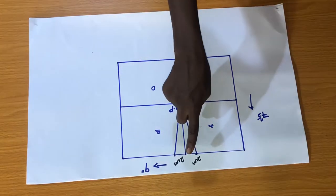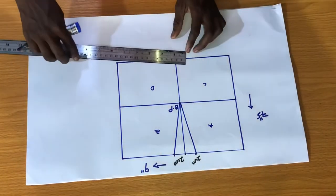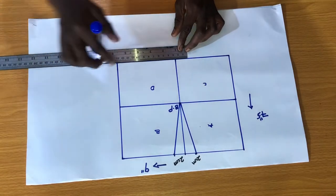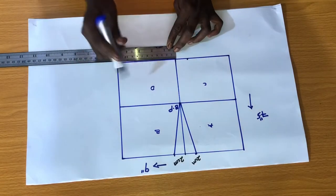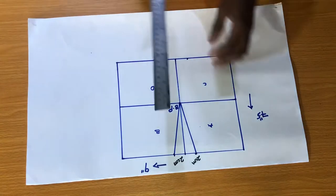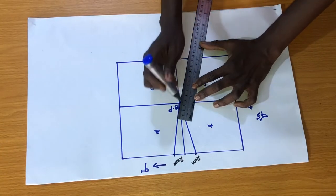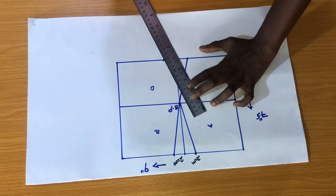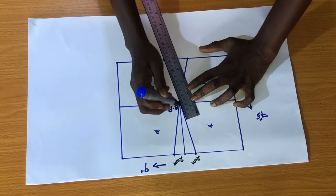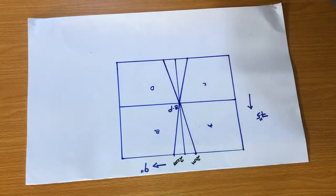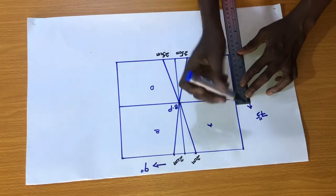So because I have two centimeters here, I'll add 0.5 to it and that'll be 2.5 centimeters which I'll mark on the line between c and d. So on the line between a and c I'll mark one centimeter on both sides which I'll connect to the bust point.